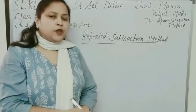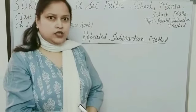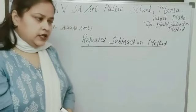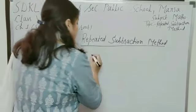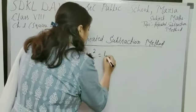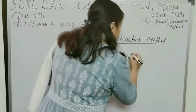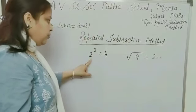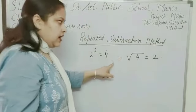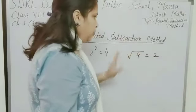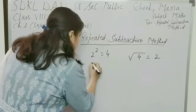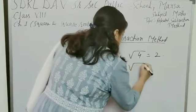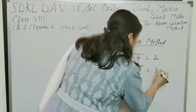In my last video, we had discussed about square root. Square root is the inverse process of square. Means, if square of 2 is equal to 4, then square root of 4 is equal to 2. And square of 3 is equal to 9, then square root of 9 is equal to 3.